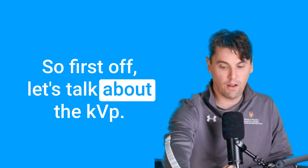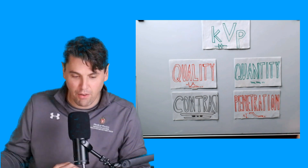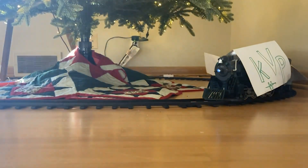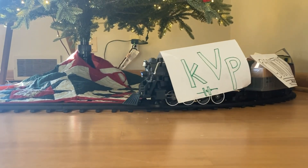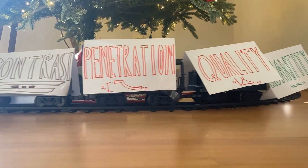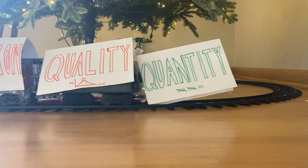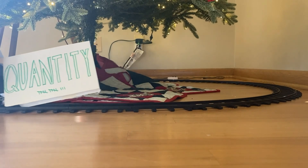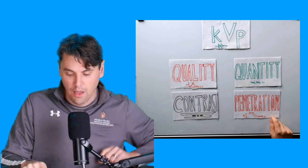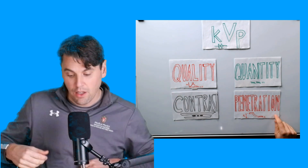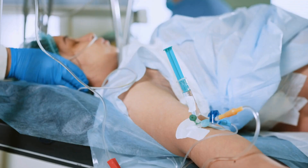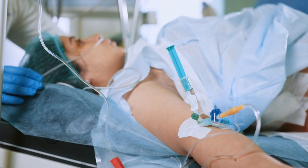So first off, let's talk about the KVP. If you had a train going around, the KVP is actually going to be pulling and driving all of these things. It's very important to the contrast in your x-ray and CT images, especially for bone and for iodine. The contrast really is going to increase as you go to lower KVPs. It's very important for the penetration, and this is how these two things play off — because in order to penetrate the patient, the higher KVP is actually beneficial because those higher energy x-rays are more likely to pass through the patient.